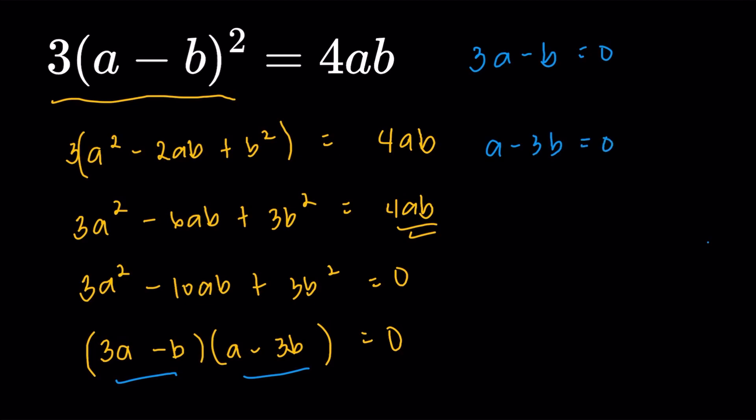Now, the first one is going to give us 3a equals b. That's going to give us a over b is equal to 1 third. Rather interesting. The second one, a equals 3b and that's going to give me a over b is equal to 3. So we do have two values of a over b. So the answer to the question should be 3 plus 1 third. That's going to be 10 thirds. Correct?